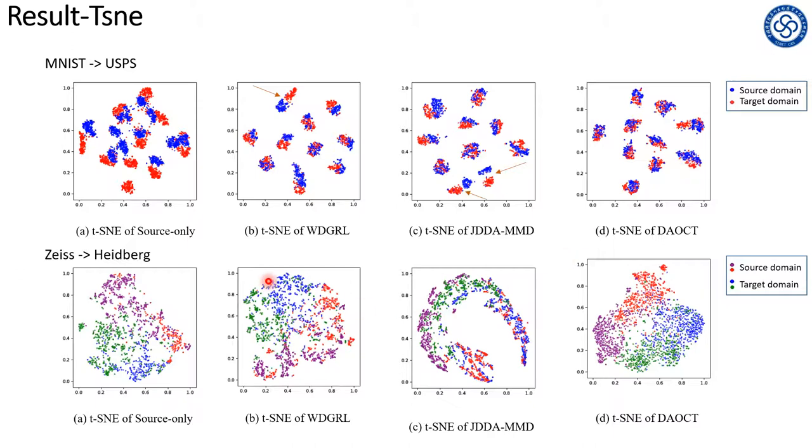And the t-SNE figures of the OCT images were displayed in the second row. As we can see, the distance between the red and purple or blue and green spots is closer in our proposed method. So it can be concluded that our model obtains the best performance in reducing the representation distance between the source and target domains.